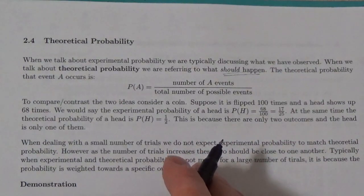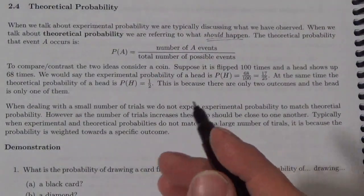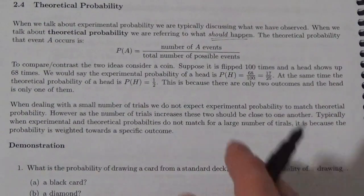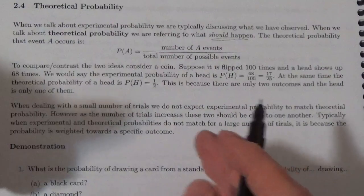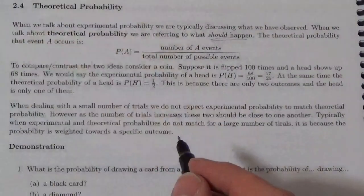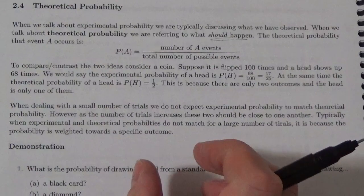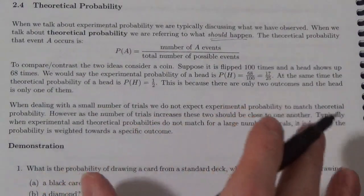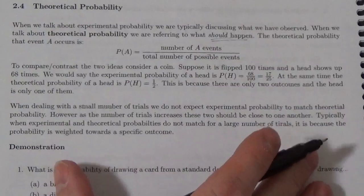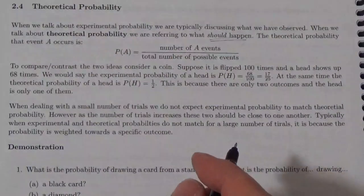Now, if you start flipping that coin and maybe for the first six or seven flips you get a head every single time, for a very small number of trials I don't really expect to see that probability pop out. But if you start to flip this a hundred times, five hundred times, a thousand times, then I expect that the experimental probability should get closer to the theoretical probability.